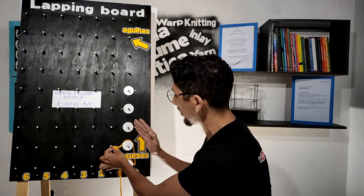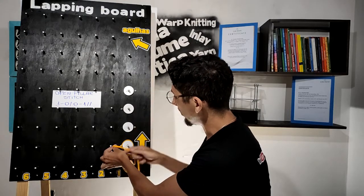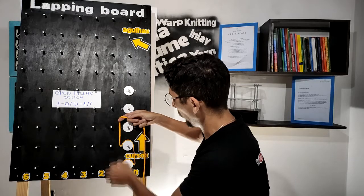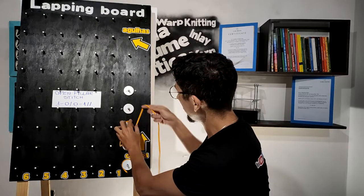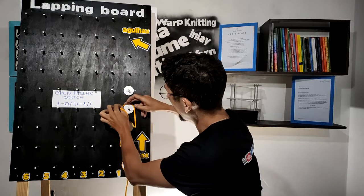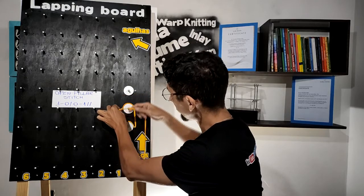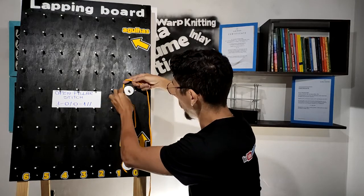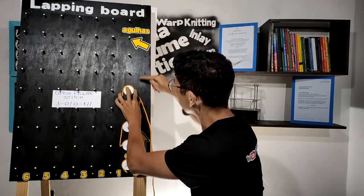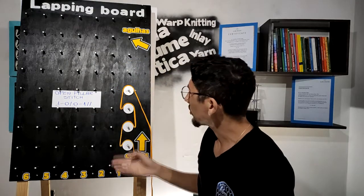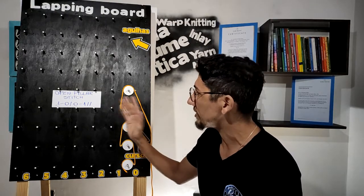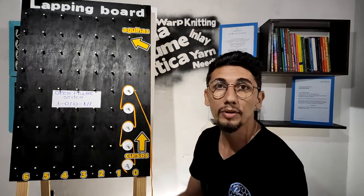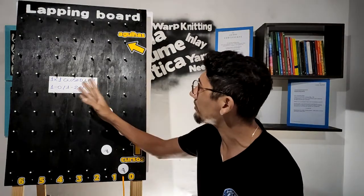We can continue on the next needles: again one-zero, zero-one; again one-zero, zero-one. This is the representation of the open pillar stitch on the lapping board. Now let's represent the one-by-one closed lap.